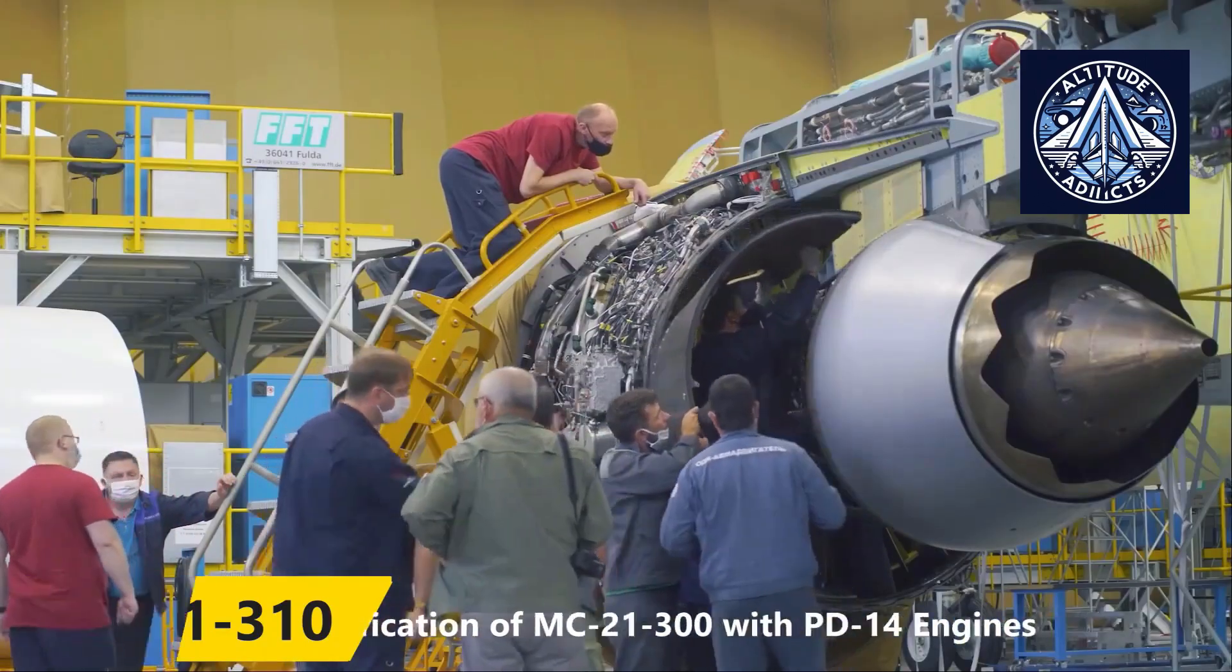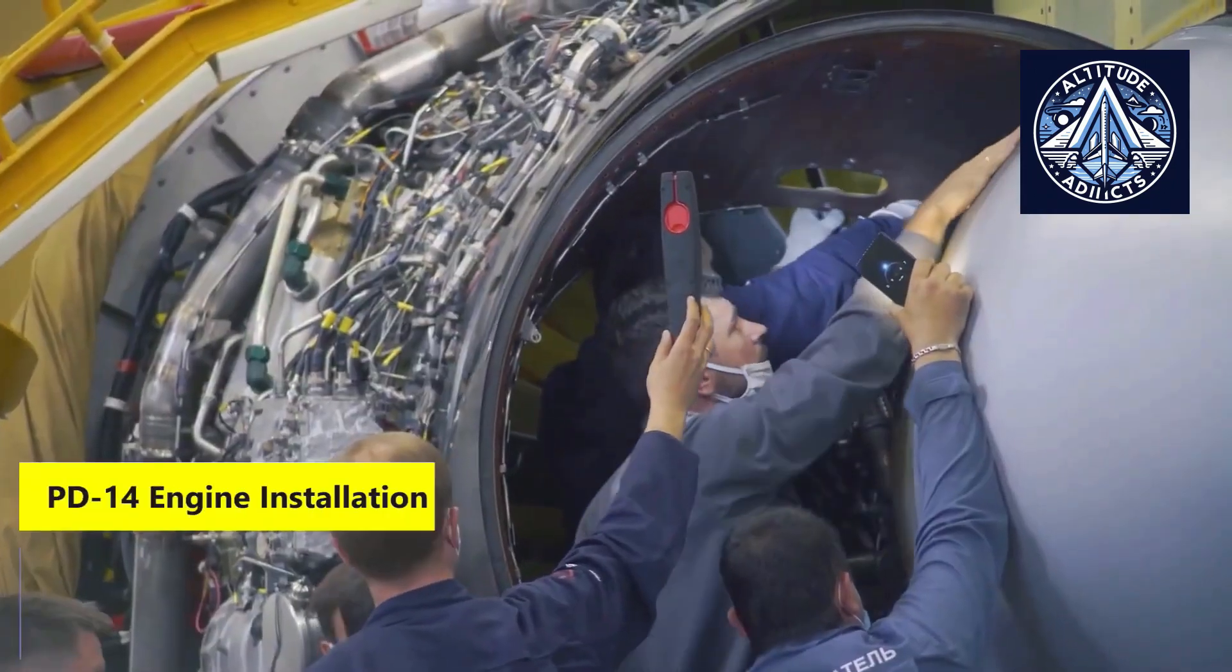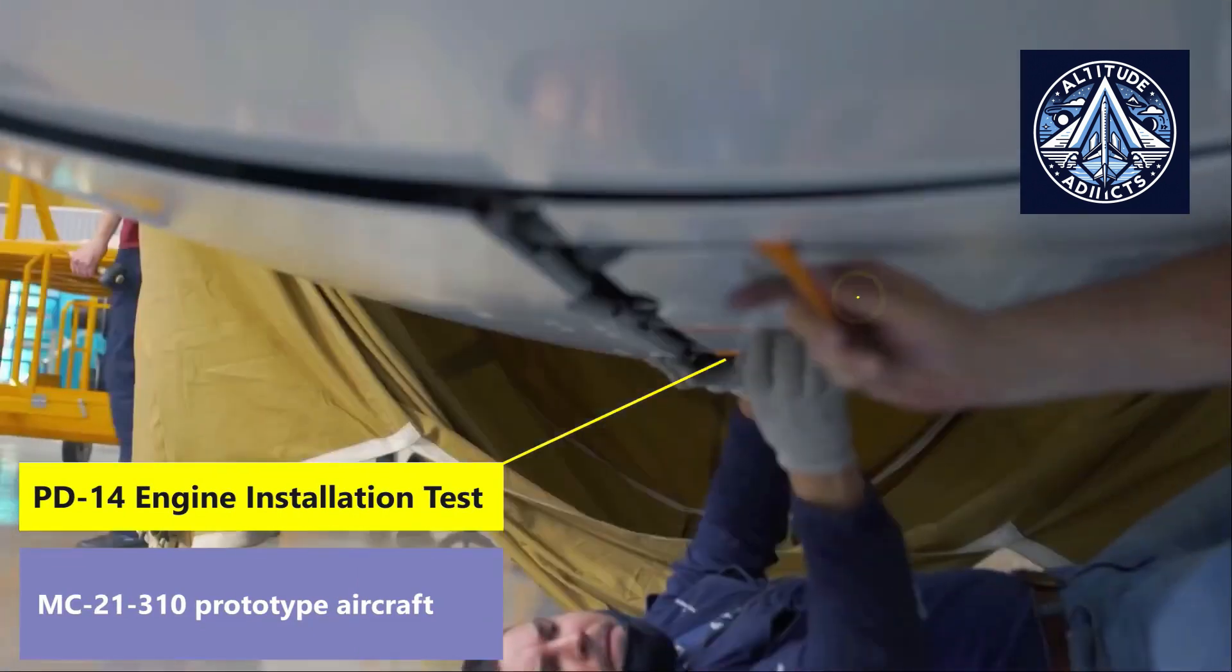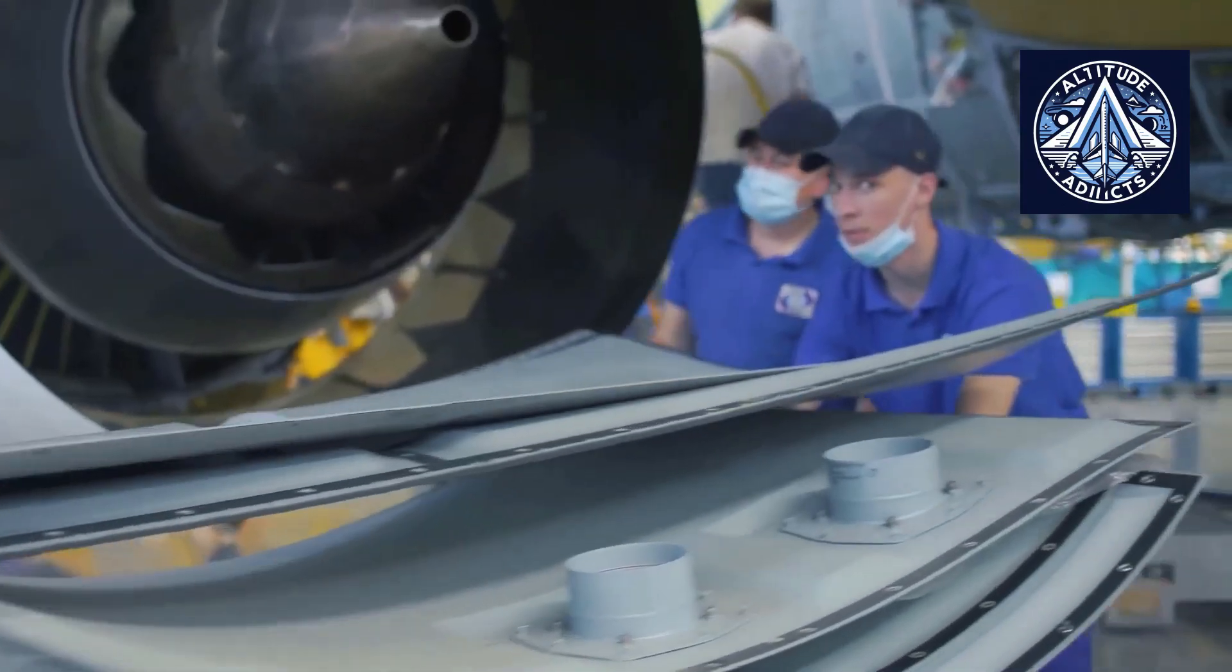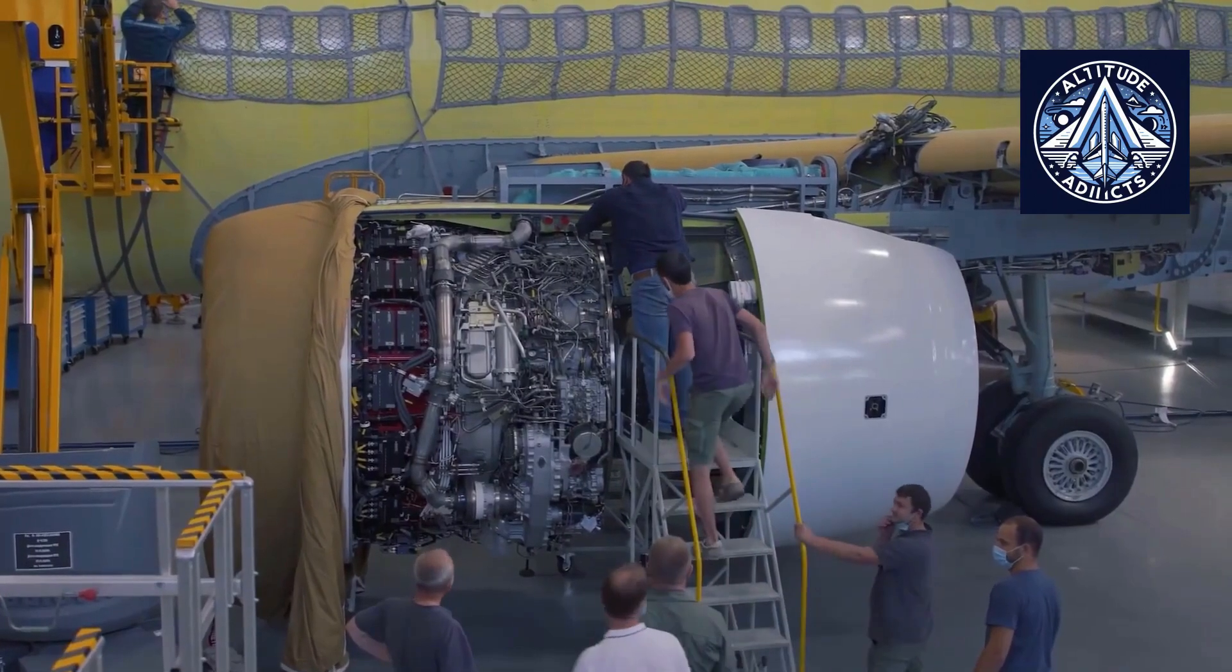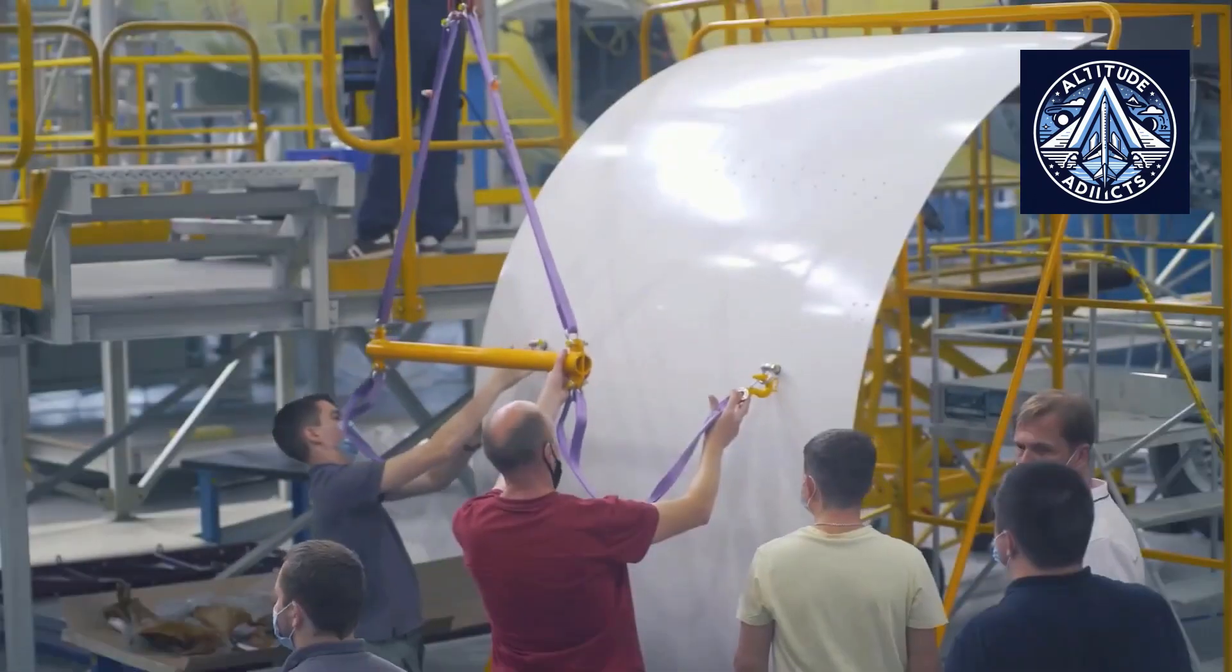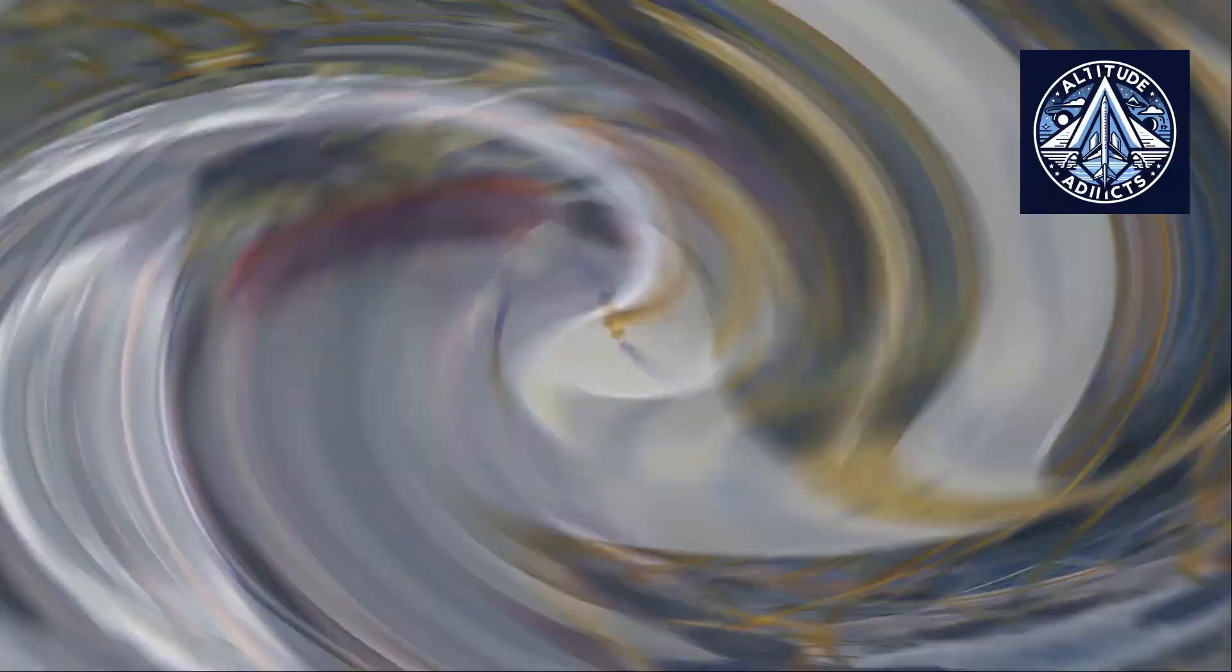Today, these modern engines, developed by the United Engine Corporation under Rostec, represent not only technological progress, but also a major modernization of Russia's industrial base. To understand their significance, it is necessary to examine how aviation engines are classified by generation and how each phase of innovation laid the foundation for today's Russian civil aviation.